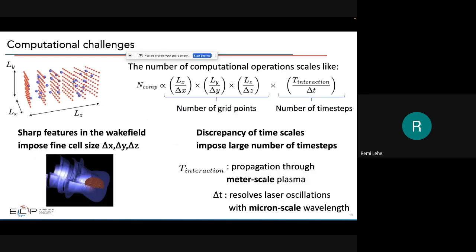This algorithm works very well but can be computationally expensive. The number of operations scales like the number of grid points times the number of time steps. Grid points scale as the physical volume divided by the cell volume dx·dy·dz. When we need to resolve sharp features in the plasma wake bubble, we need very fine cells, making the number of grid points very large. The number of time steps is also large: the simulation duration is the time for the laser to propagate through a meter-scale plasma column.